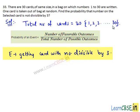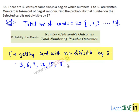In between 1 to 30, the numbers which are divisible by 3 are 3, 6, 9, 12, 15, 18, 21, 24, 27, and 30.